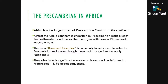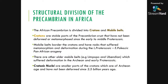The Precambrian of Africa includes significant unmetamorphosed and undeformed lower Proterozoic to early Paleozoic sequences that form platform deposits. The Precambrian rocks of Africa are divided into two categories: cratons and mobile belts. The cratons are stable parts of the Precambrian crust that have not been deformed or metamorphosed since the early to middle Proterozoic — that is, up until about a billion years ago.